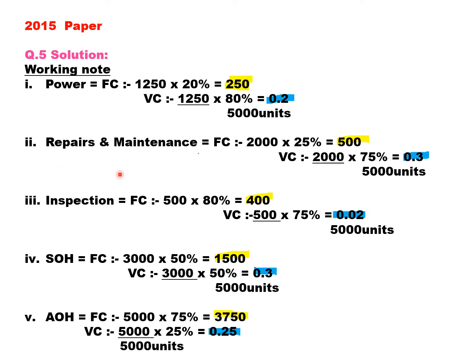Next, repairs and maintenance. Total repairs and maintenance is 2000, in which 75% is variable and 25% is fixed. Fixed cost: 2000 into 25% = 500. We don't divide by 5000 units because for fixed cost we want the total. Variable cost: 2000 divided by 5000 units into 75% — we get 30 paisa per unit. We divide by 5000 to find out per unit, as variable cost requires per unit.